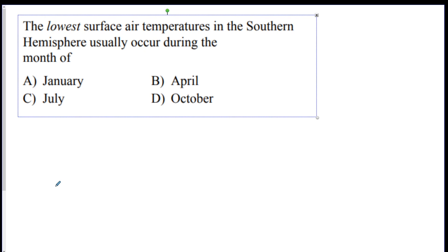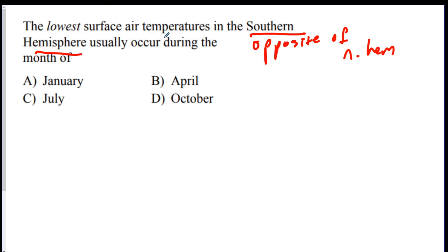The lowest surface temperatures in the southern hemisphere usually occur during what month? Southern hemisphere is always going to be the opposite of the northern hemisphere. The lowest temperatures in the northern hemisphere happen in December, which means the lowest temperatures in the southern hemisphere happen in June or July. So C is the best answer. They're getting their winter in July and they get their summer in January or December, around there. The southern hemisphere is always the opposite season as the northern.